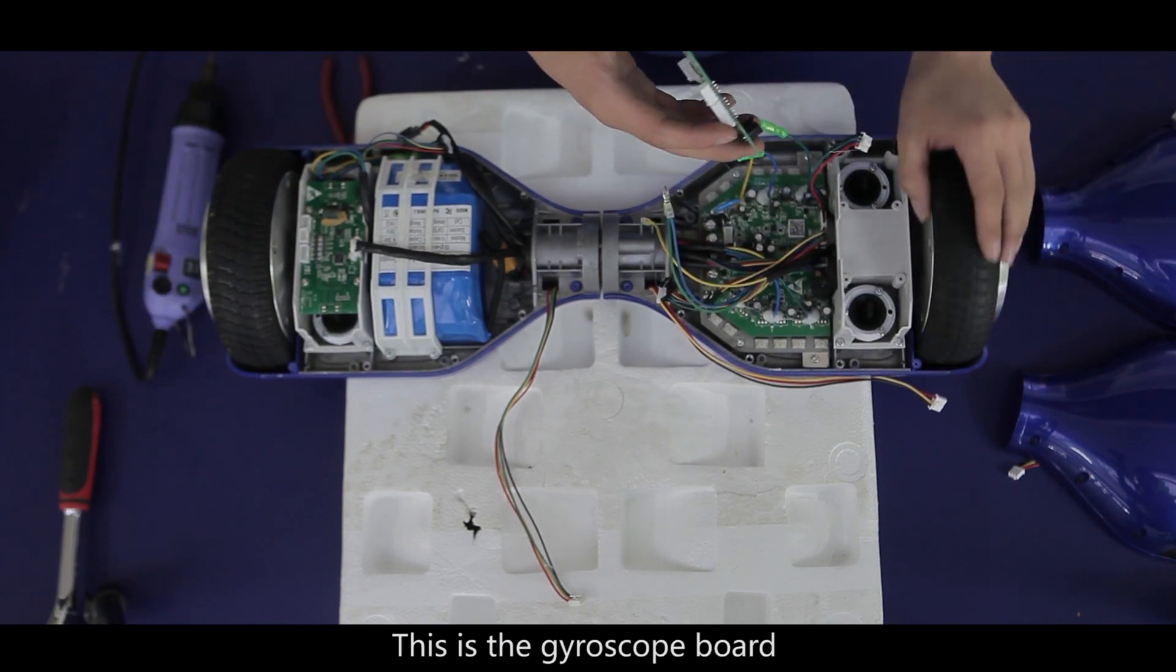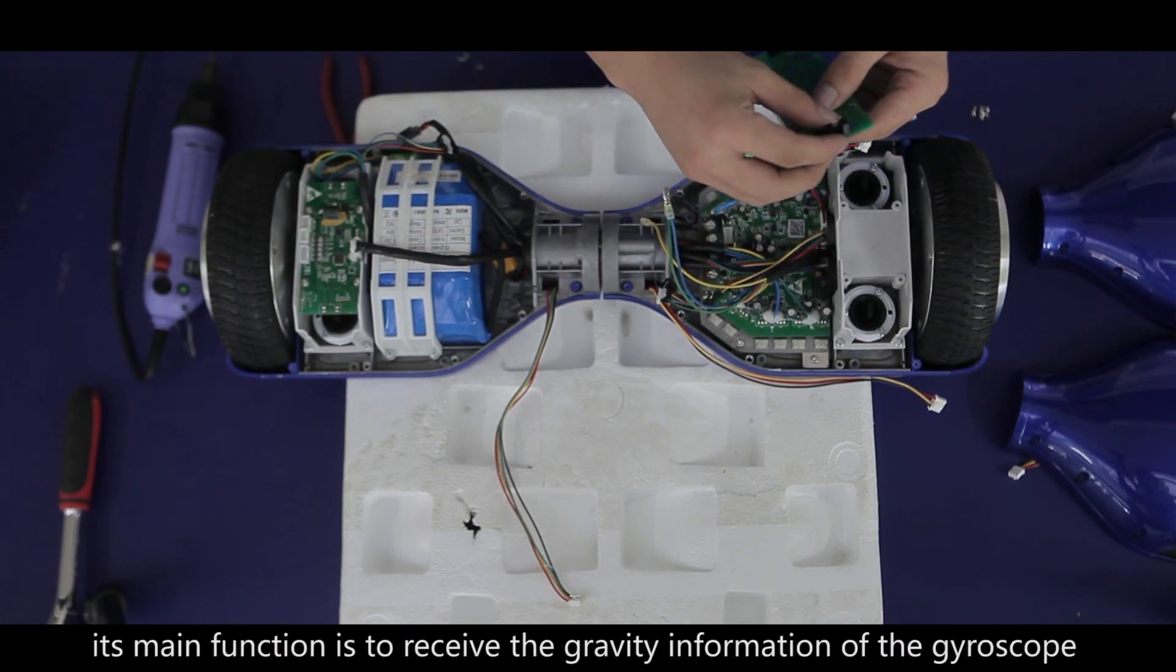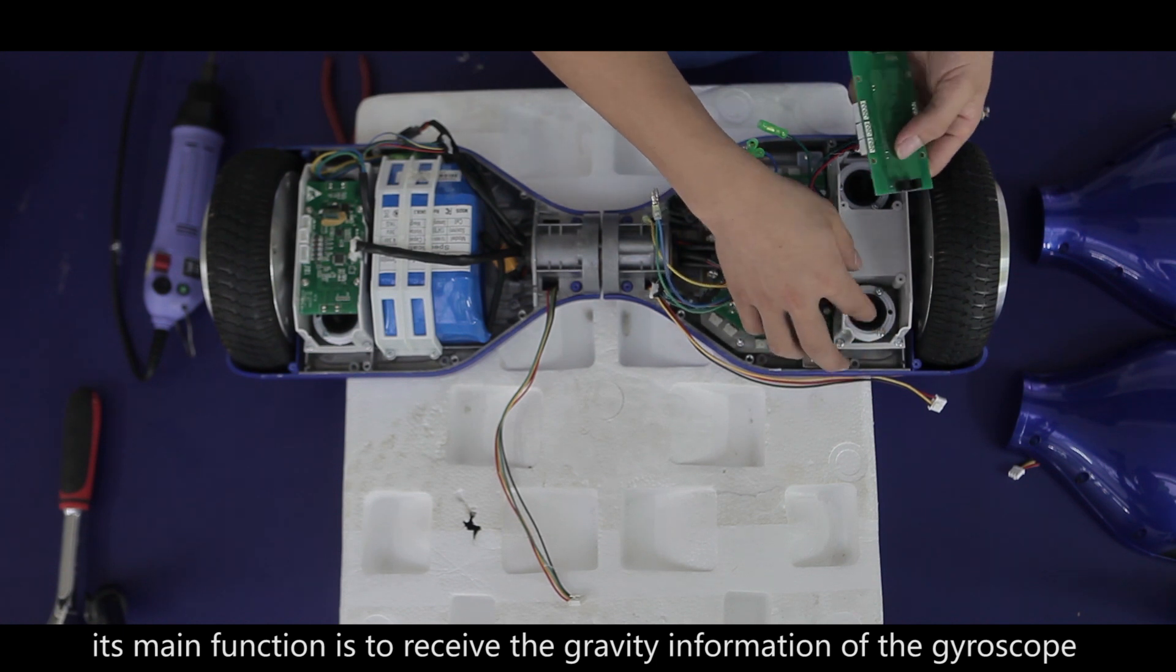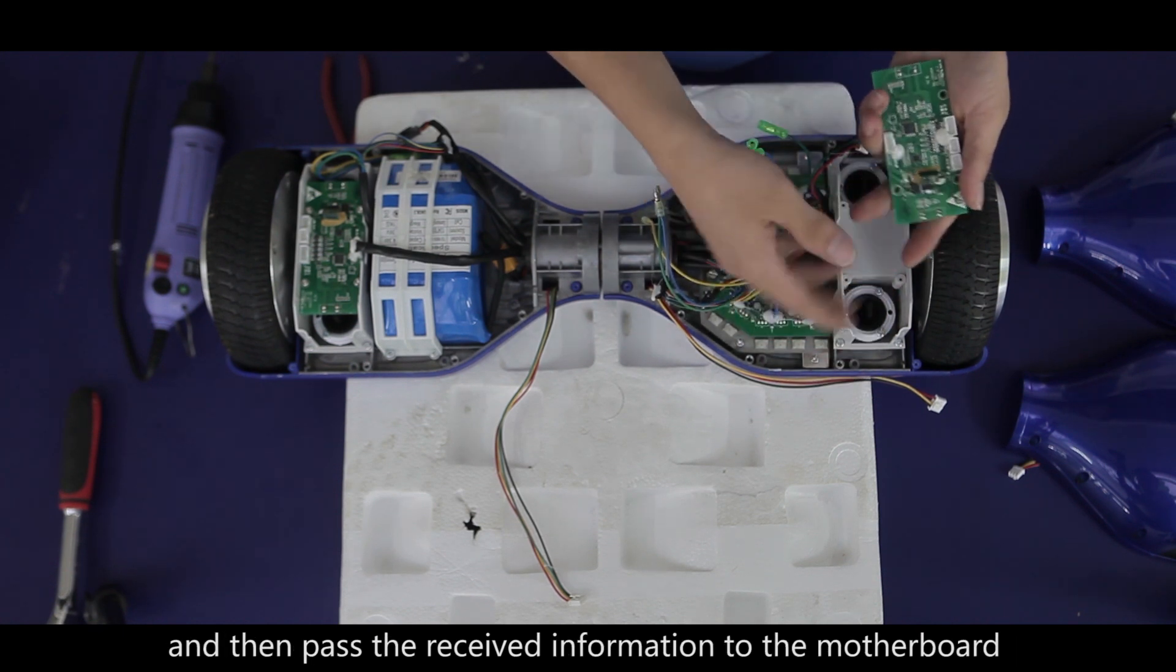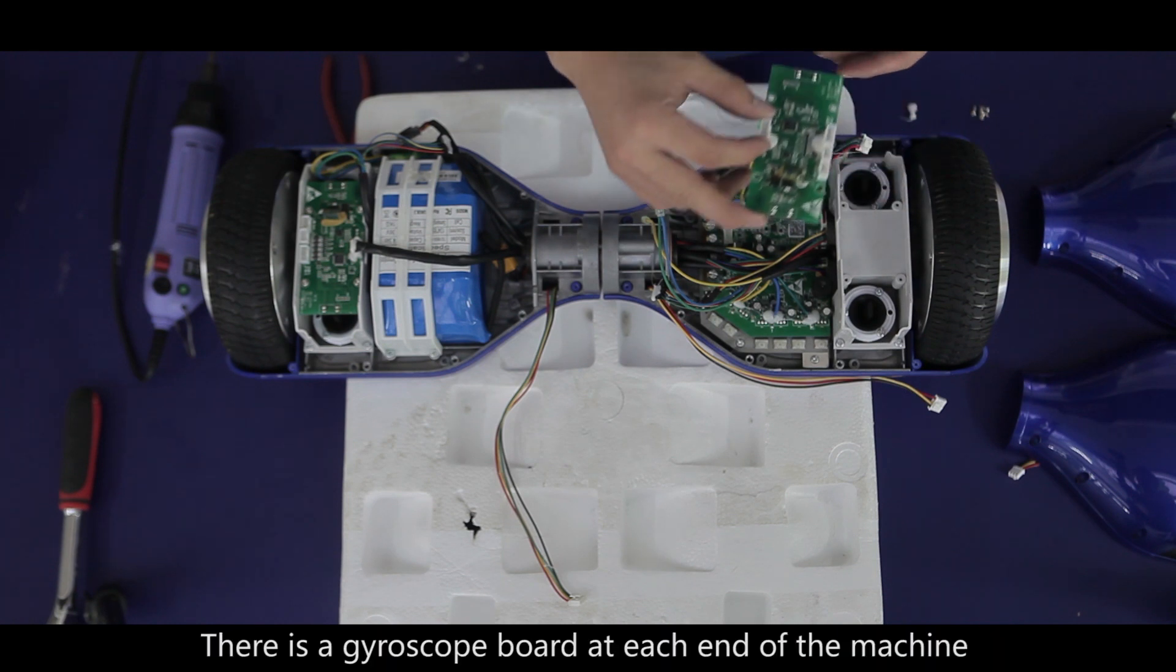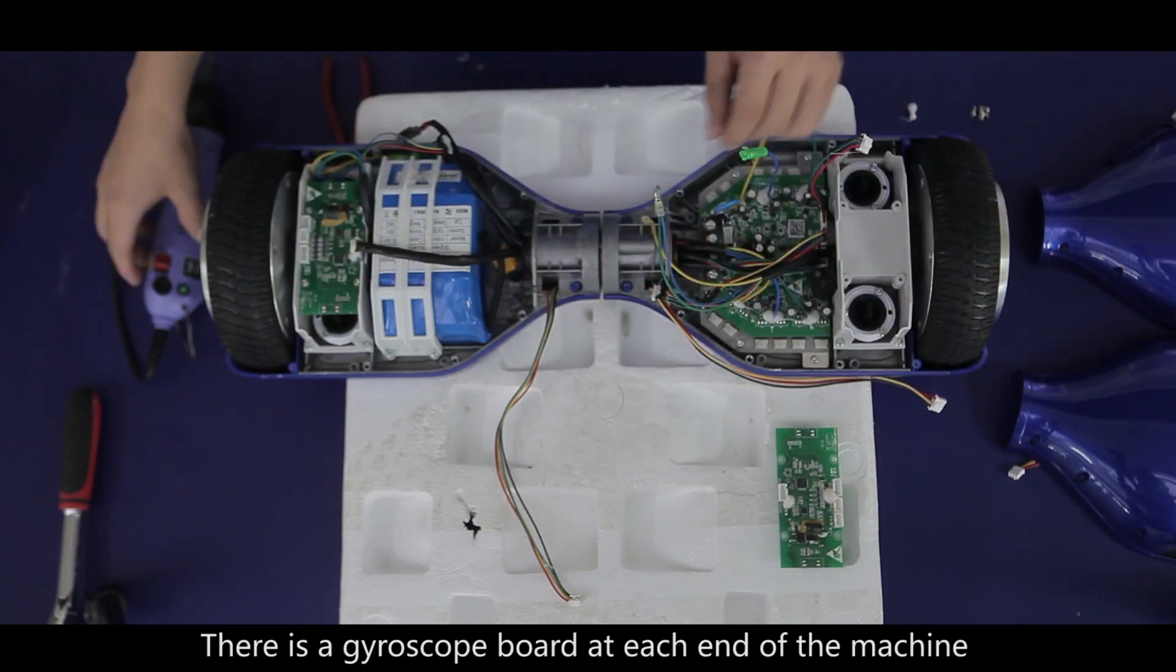This is the gyroscope board. Its main function is to receive the gravity information of the gyroscope and then pass the received information to the motherboard. There is a gyroscope board at each end of the machine.